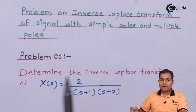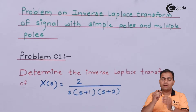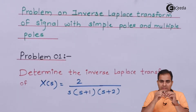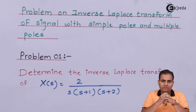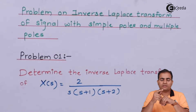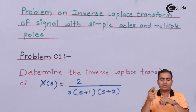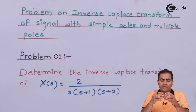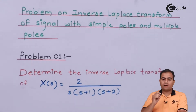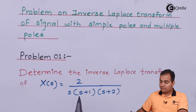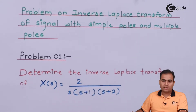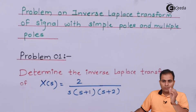Multiple pole means we have a number of poles on the same location, which means we can have (S+A)² or S² or (S+B)², meaning we have a number of poles on the same location. The current numerical is based on a simple pole.